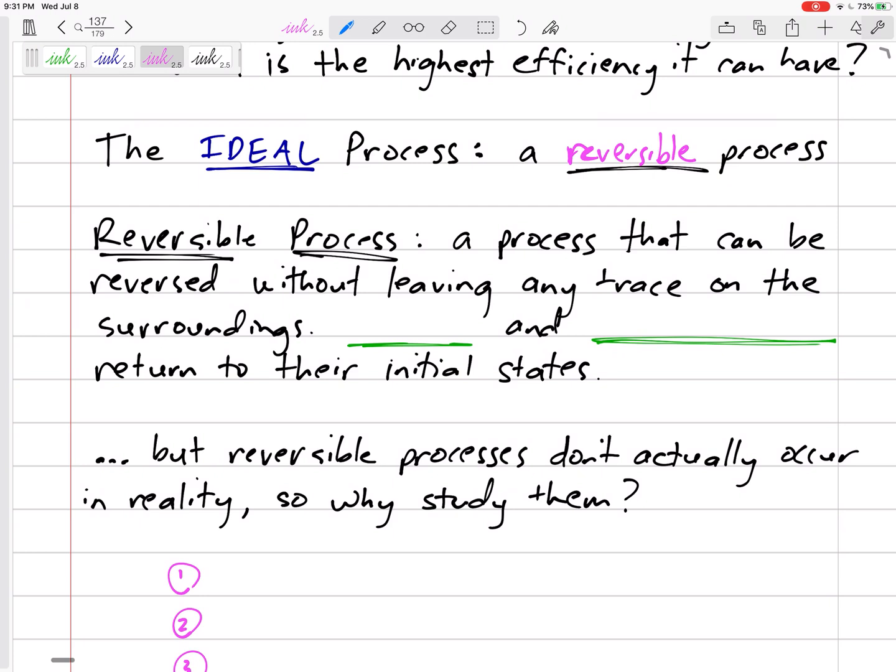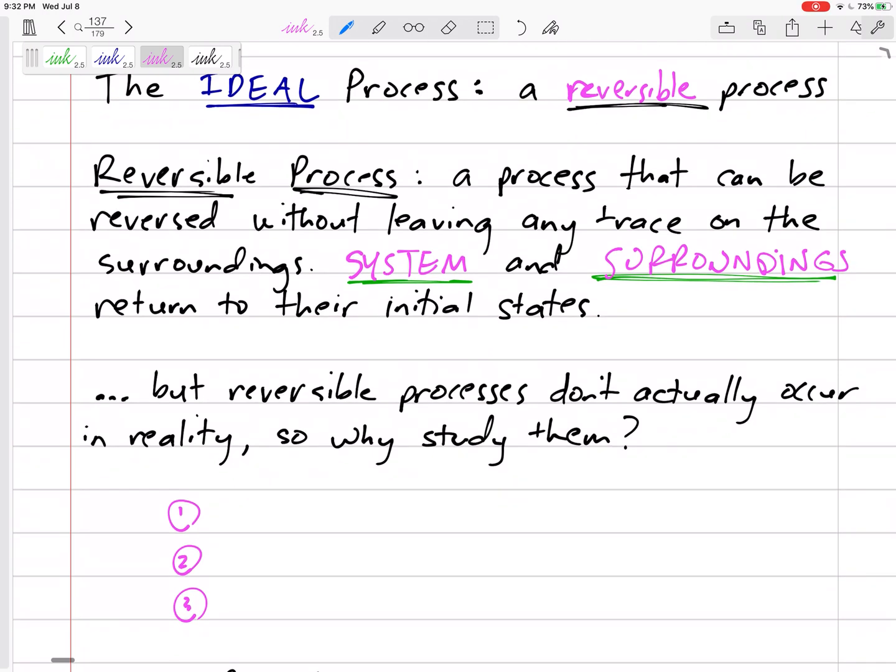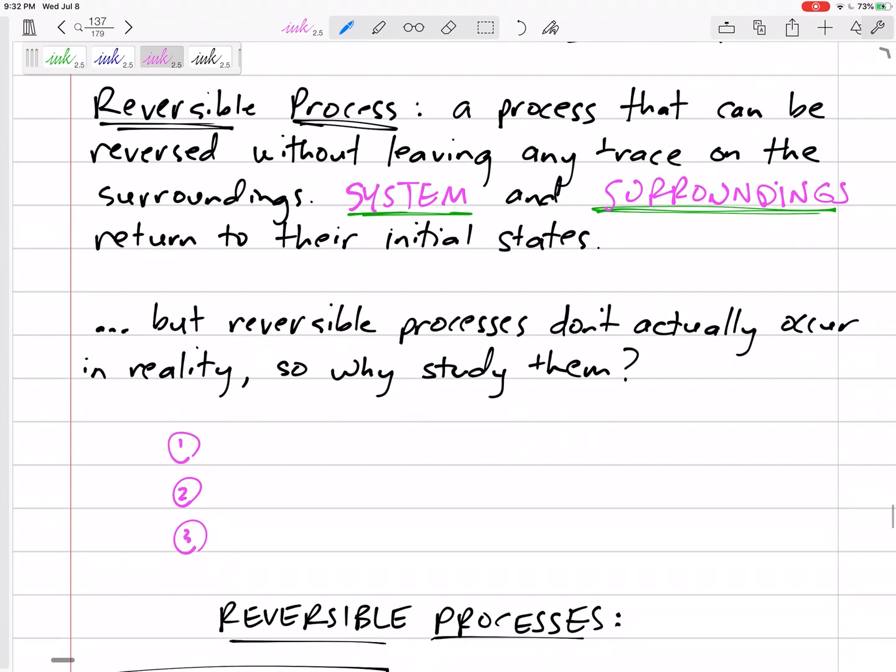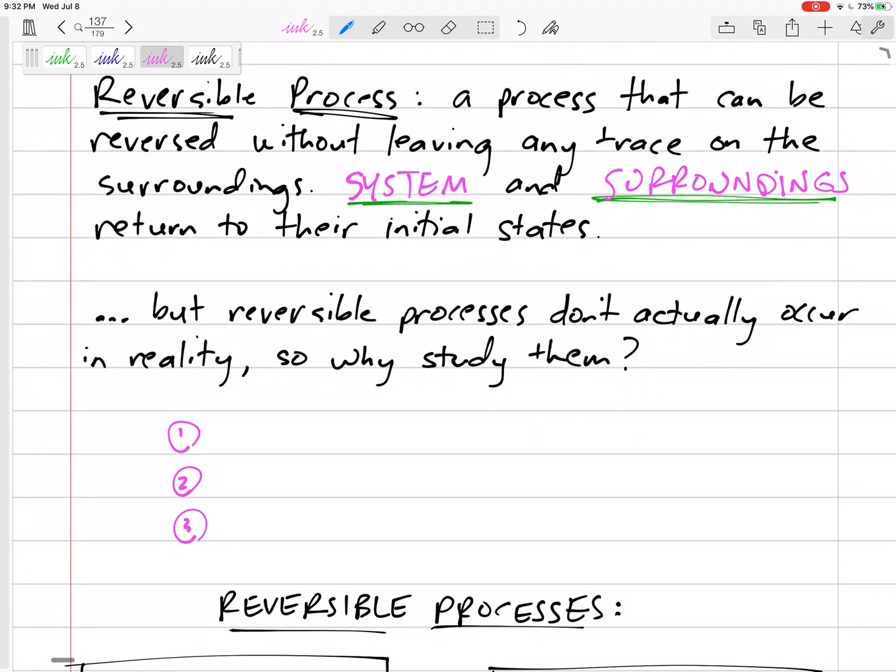A reversible process is a process that can be reversed without leaving any trace on the surrounding, so both the system and the surroundings have to return to their initial states. But reversible processes don't actually occur in reality, so why study them?